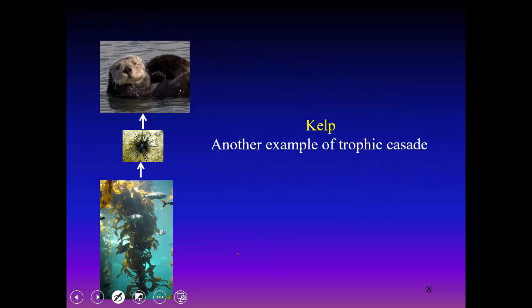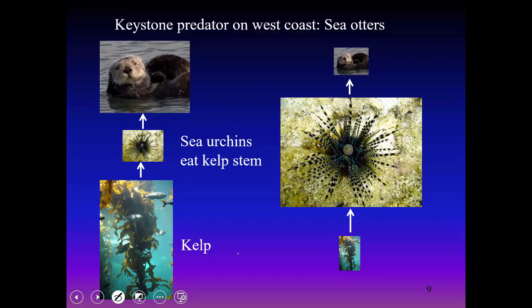Kelp provides a great example of a trophic cascade. On the West Coast, sea otters are a keystone predator: when abundant, they keep sea urchin populations in check, allowing kelp to flourish. When sea otters were hunted, sea urchin numbers exploded, and the sea urchins grazed heavily on the kelp, preventing it from flourishing — a classic trophic cascade across multiple food chain levels.